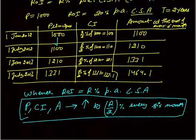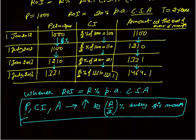Your initial principal was 1000 and in 6 months it increased by R by 2%, that is 10%. Again 10% increase, again 10% — the same way compound interest and amount are both increasing by 10% every 6 months. This is because the annual rate was 20%, and 20 divided by 2 gives 10%.